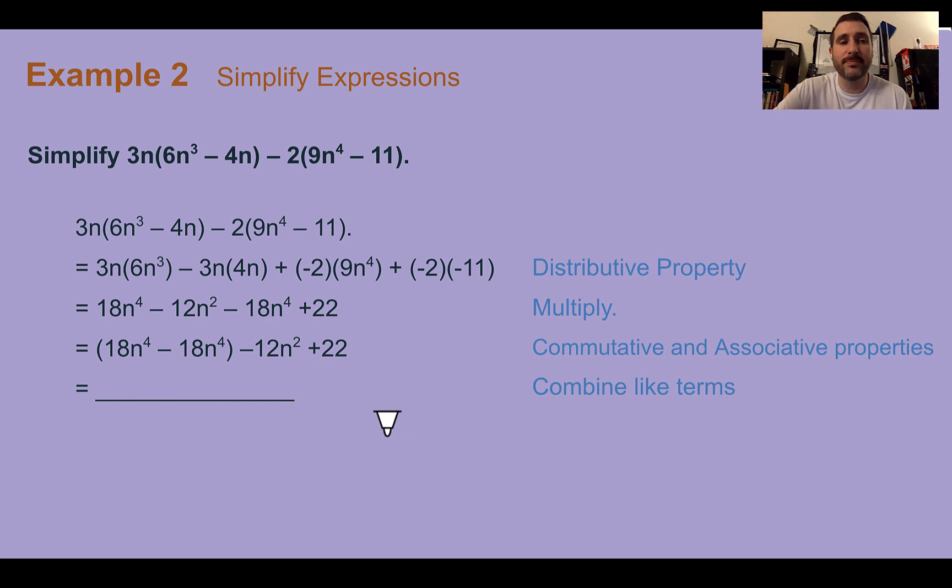Example 2, simplify expressions. Simplify this polynomial term. Here we can see there's a couple different things happening. We have multiplication here and here, and we actually have some subtraction happening there. So first let's multiply stuff out, since that's going to come first in order of operations. So 3n times 6n³, we can distribute that. And we would get 18n⁴.